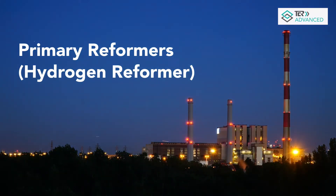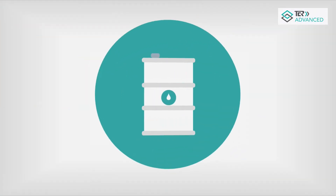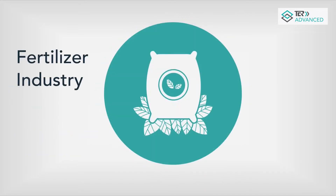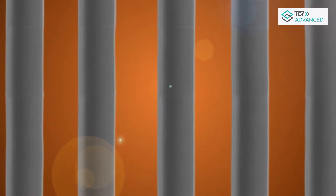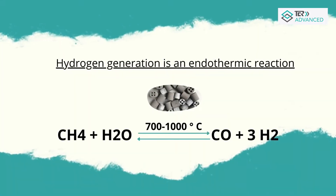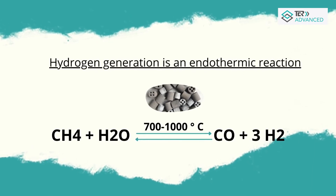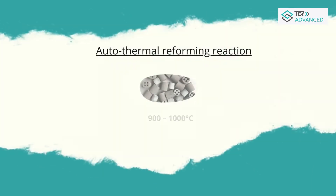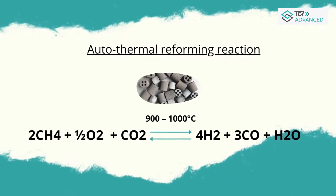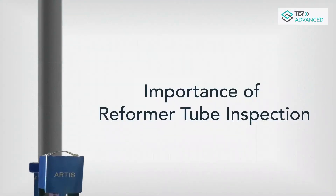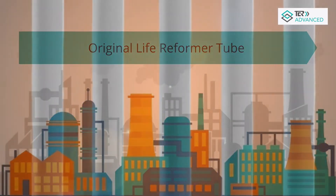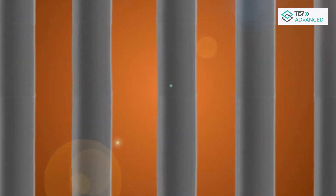Primary or hydrogen reformers, whether in oil and gas, petroleum, or fertilizer industry, are an integral part of the facility. Reformer tubes are used for cracking hydrocarbon to produce hydrogen and carbon dioxide, either in the presence of steam or in the presence of oxygen. The life of a reformer tube is majorly influenced by operating temperature.